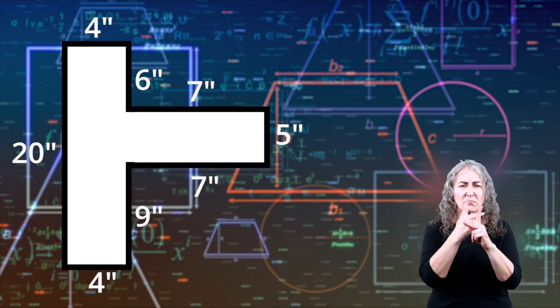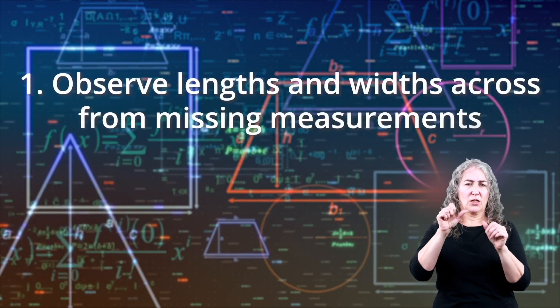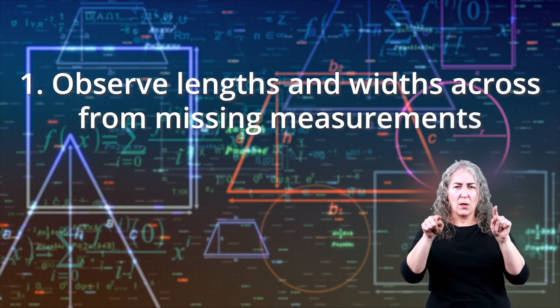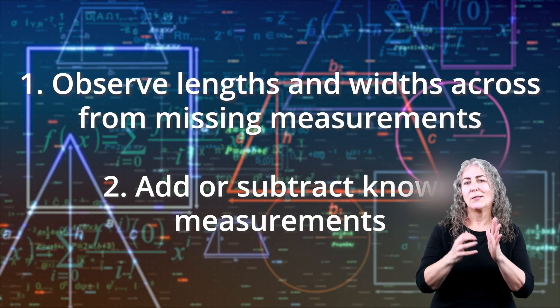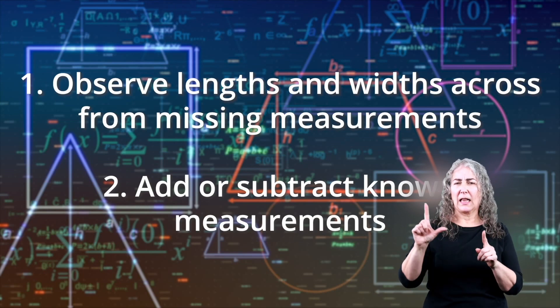The key to finding missing measurements of odd shaped figures is to observe the lengths or widths directly across from the missing measurements. Other times, you have to add or subtract certain measurements to find a missing length or width.